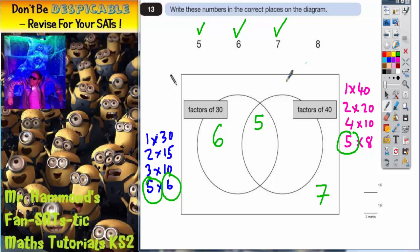The number 8 is not in the factors of 30 but it is in the factors of 40 there. So number 8 needs to go only in the factors of 40. So that's the number 8 sorted. And there you have it, question number 13 is done.